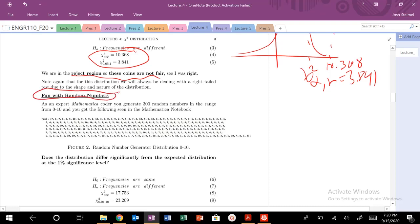We are going to look at another example of a chi-squared hypothesis test, and this time we're going to have fun with some random numbers. You're the mathematics expert now at this point. You can generate 300 random numbers from 0 to 10 with ease, and we get the following results kind of shown here.